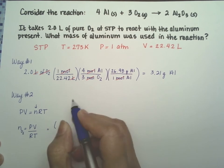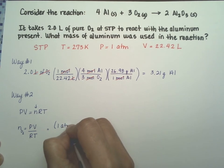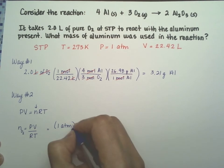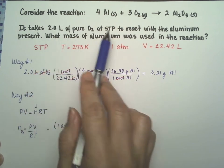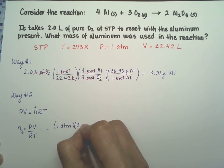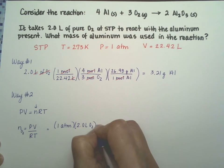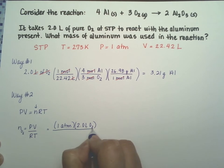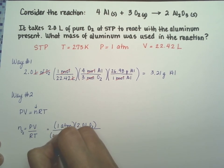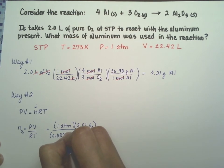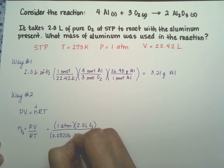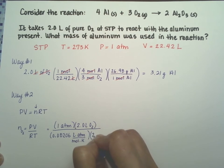Plug the numbers in. So under STP, STP pressure is one atmosphere. They give us two liters of pure oxygen. So we're going to plug the two liters of O2 here. The gas constant, 0.08206 liters atmospheres mole times Kelvin. And the temperature, STP temperature, 273 kelvins.